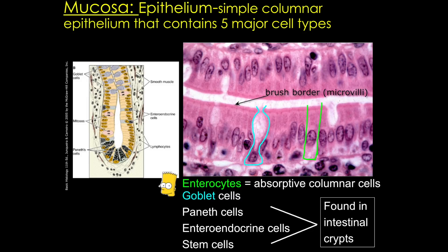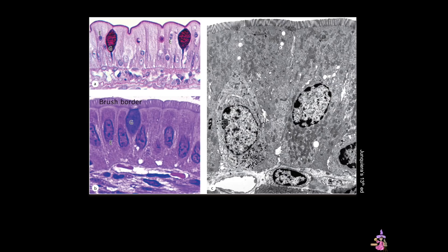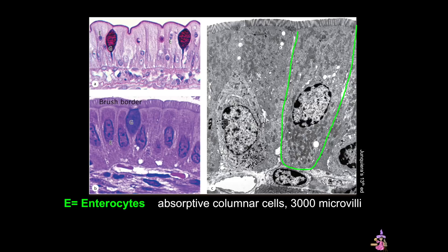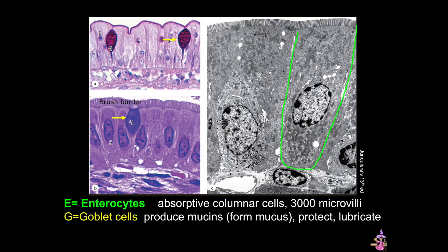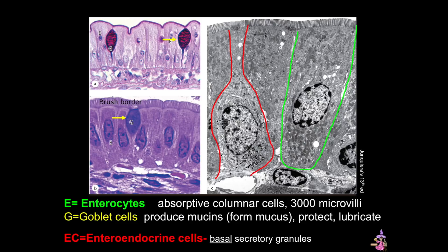Here are further examples. In all three images you can see enterocytes with their brush borders. In the EM image, one of those cells is outlined in green, and each contains roughly 3,000 microvilli at its apical end. In contrast, the goblet cells marked with yellow arrows produce mucins and form mucus for protection. Finally, we can see an enteroendocrine cell outlined in red, with its very characteristic basal secretory granules.